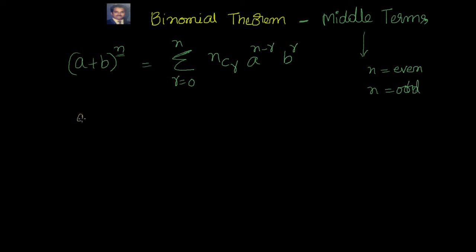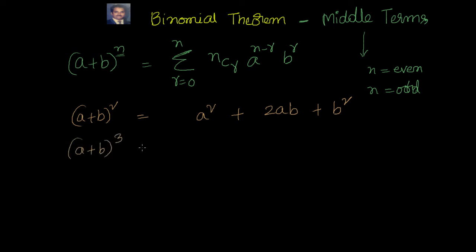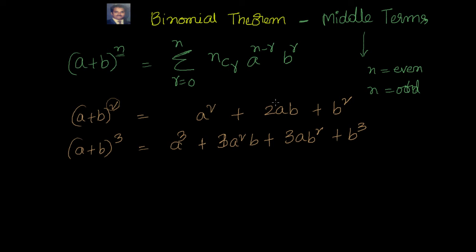Let's start from fundamentals. Take (a + b)^2 — we know that is a² + 2ab + b². For (a + b)^3, we know there are four terms: a³ + 3a²b + 3ab² + b³. If n is 2, we have 3 terms, and the middle term is clearly the second term. So when n is even, the formula for the middle term position is n/2 + 1.